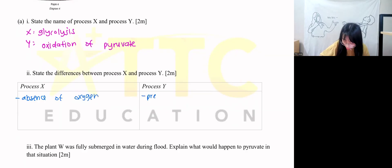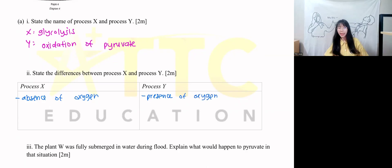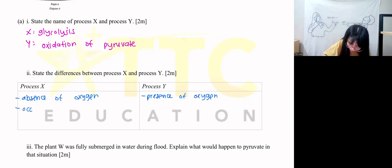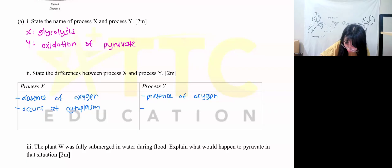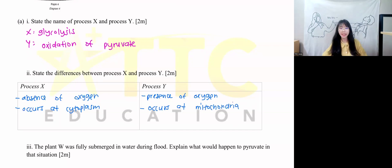For process Y, there is a presence of oxygen. We can also talk about where each process occurs: process X occurs in the cytoplasm, and process Y occurs in the mitochondria.